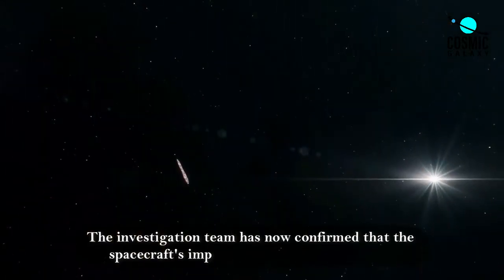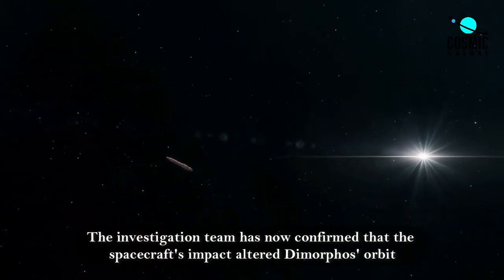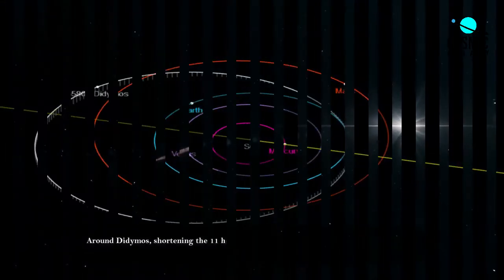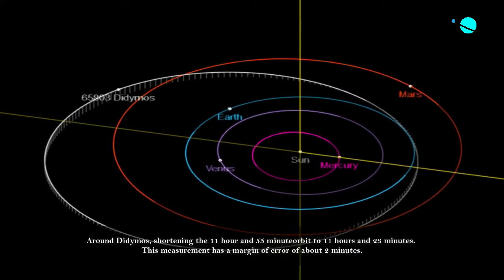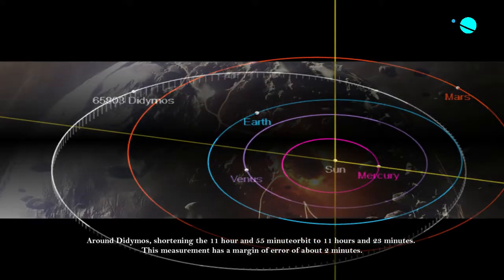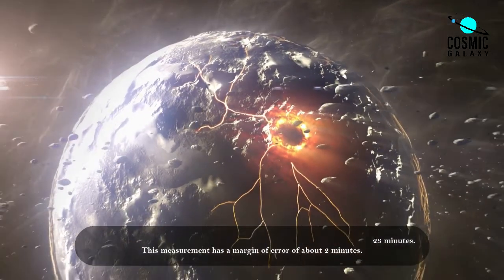The investigation team has now confirmed that the spacecraft's impact altered Dimorphos's orbit around Didymos, shortening the 11 hour and 55 minutes orbit to 11 hours and 23 minutes. This measurement has a margin of error of about two minutes.